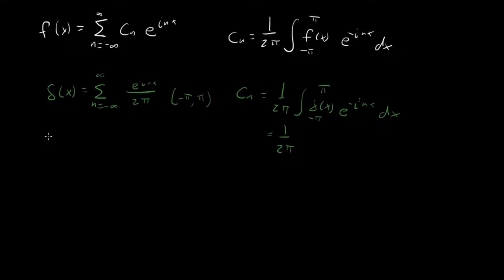is that we can say that this sum right here on the right hand side, going from minus infinity to infinity, e to the i n x over 2 pi, this is equal to a sum with k going from minus infinity to infinity of delta of x minus 2 pi k, right?